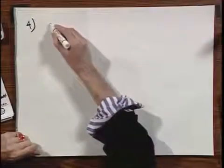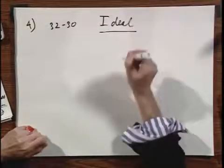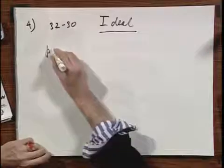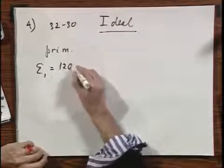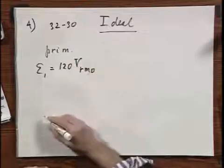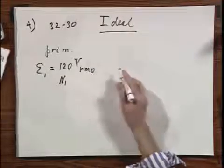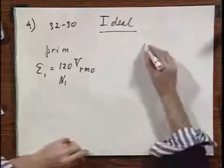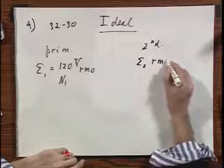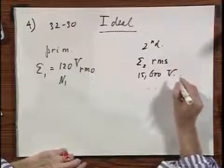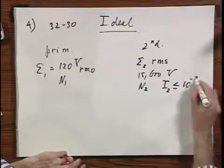Problem number four, which is 3230. It is a step-up transformer and it is an ideal transformer — I will come back to that several times. I have a primary winding whereby the driving EMF has 121 volts RMS, going with cosine omega t. It has N1 windings. On the secondary side, E2 RMS is 15,600 volts — much higher. I have N2 windings and I2 must be less than or equal to 10⁻² amperes.